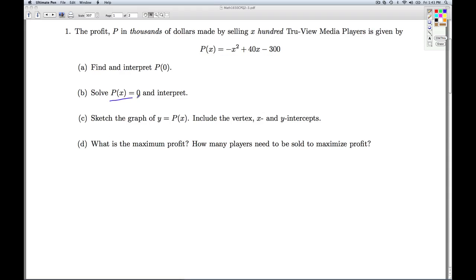Alright, part B, we're asked to solve P of X equals 0 and interpret that. So now instead of letting the X be 0, we're looking at where the P of X equals 0. So I set my formula for P of X, negative X squared plus 40X minus 300 equal to 0. It's a quadratic equation. I attempt to factor. To make things a little easier for me, I'll factor the negative 1 out.